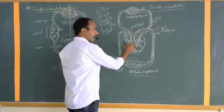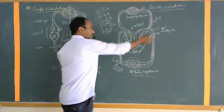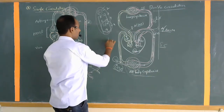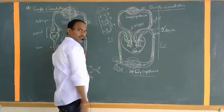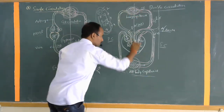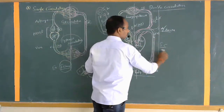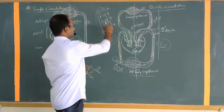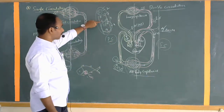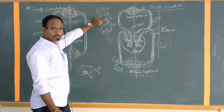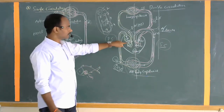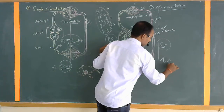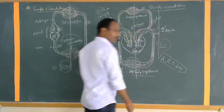Here, the heart receives the blood twice — once oxygenated blood and once deoxygenated blood. This total pathway is called double circulation. The right side handles pulmonary circulation where blood is purified in the lungs, and the left side handles systemic circulation to the body. The examples are amphibians, reptiles, birds, and mammals.